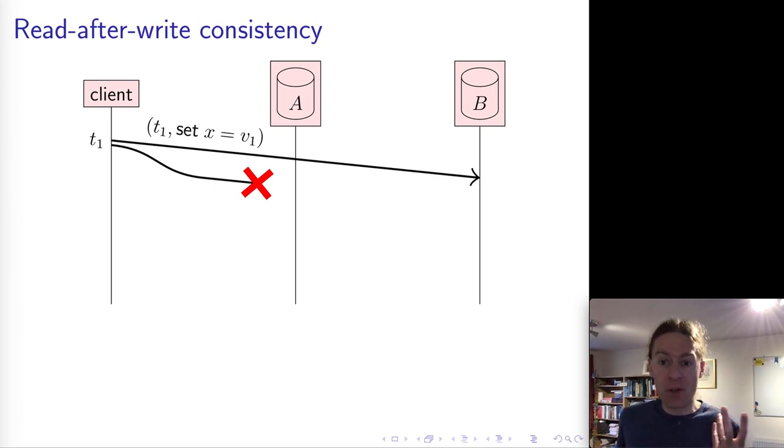So let's look at one particular property that we might want in a fault-tolerant replicated system. And that is called read-after-write consistency. So what happens here is that a client first writes some data, and then it reads the same data back again. And you would naturally expect that client to then see the data that it has just written. So here, the client wants to set the key x to the value v1, and we attach a timestamp of t1 to that operation.